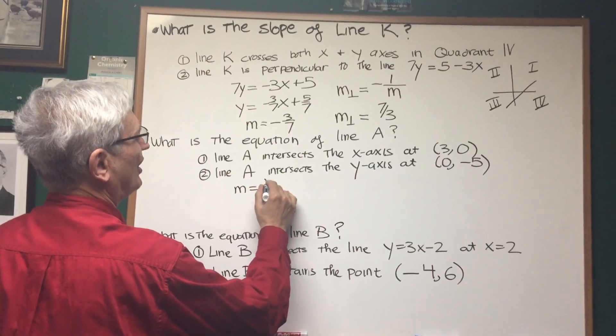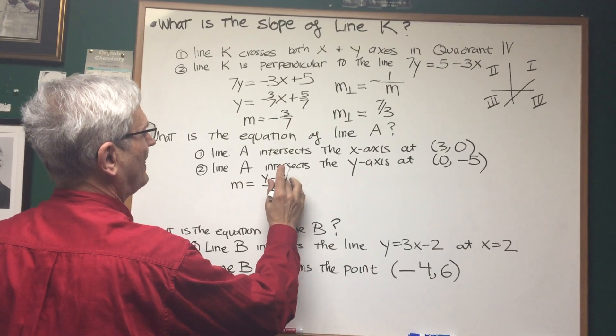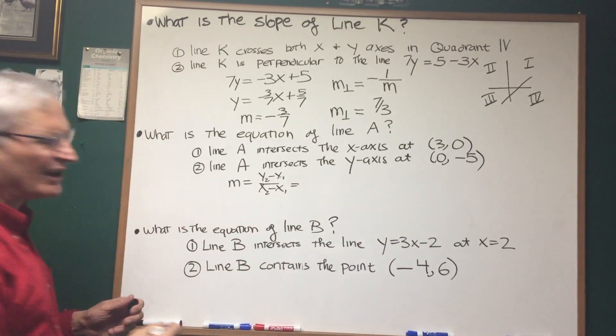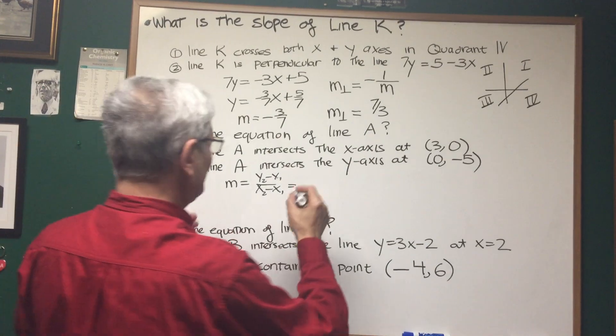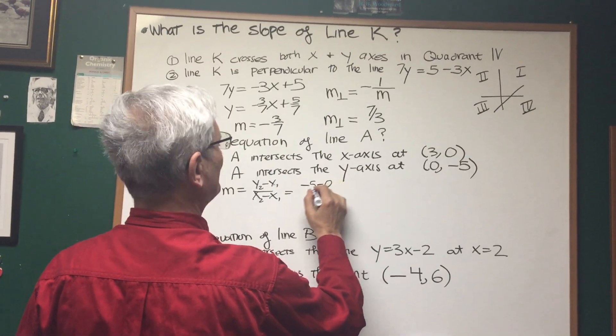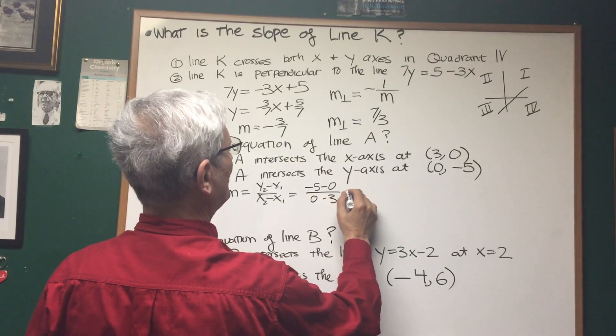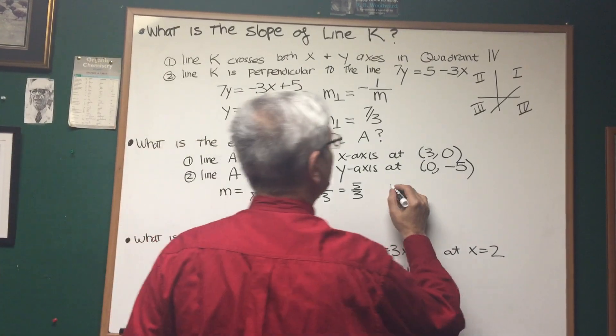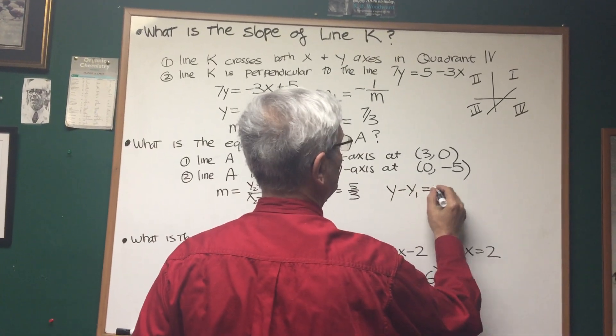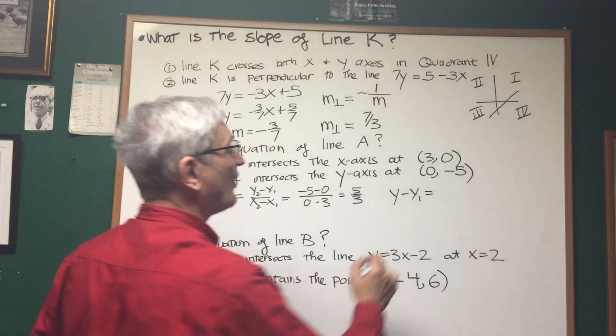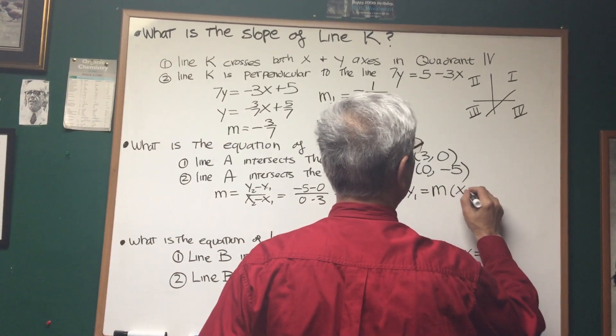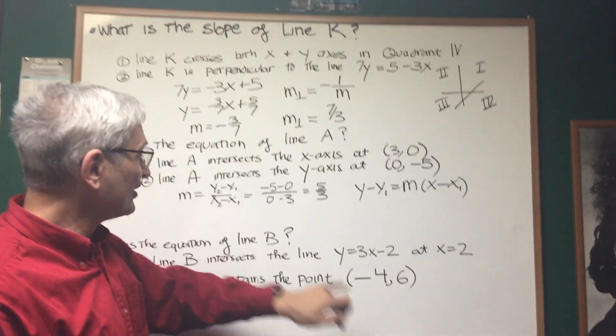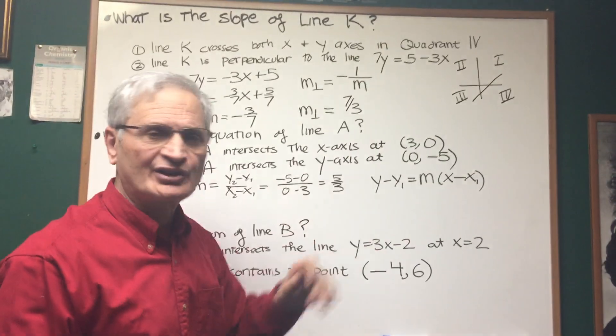We'll use the slope formula. The slope formula for a line is (y2 minus y1) divided by (x2 minus x1). We can easily figure that out. -5 minus 0 and 0 minus 3. So the slope here is 5/3. Once we know the slope, we can use the point-slope formula for finding the equation of a line: y minus y1 equals m times (x minus x1), where we can take x1 and y1 as 3,0 and the slope 5/3.